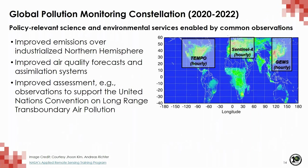On top of TROPOMI, the next generation of measurements will be a constellation of geostationary instruments. The TEMPO mission — Tropospheric Emissions Monitoring Pollution — is one of three geostationary missions aiming to measure atmospheric composition. The Sentinel-4 mission from the European Space Agency has a prospective launch date of 2022 to 2023. GEMS, the Geostationary Environment Monitoring Spectrometer, is a Korean instrument that should hopefully launch within the next year. These three missions will comprise a global pollution monitoring constellation, where polar-orbiting satellites like OMI and TROPOMI only overpass a location once a day, whereas geostationary will provide hourly measurements over the region they cover.